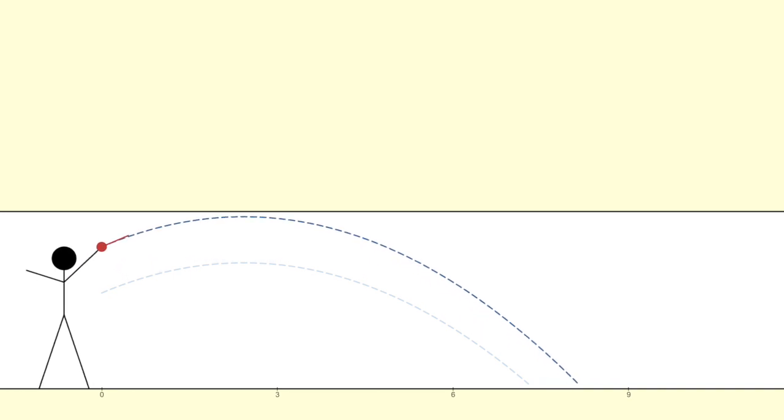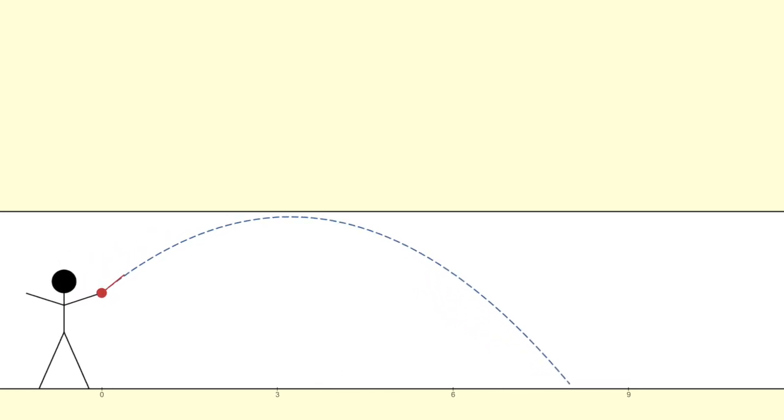This means that if we somehow knew the ideal height, we could easily compute the corresponding ideal angle, and vice versa. In other words, we have a constraint that ties the two variables together, and that conveniently reduces the scope of the problem. So step one would be to establish that height-angle relationship.